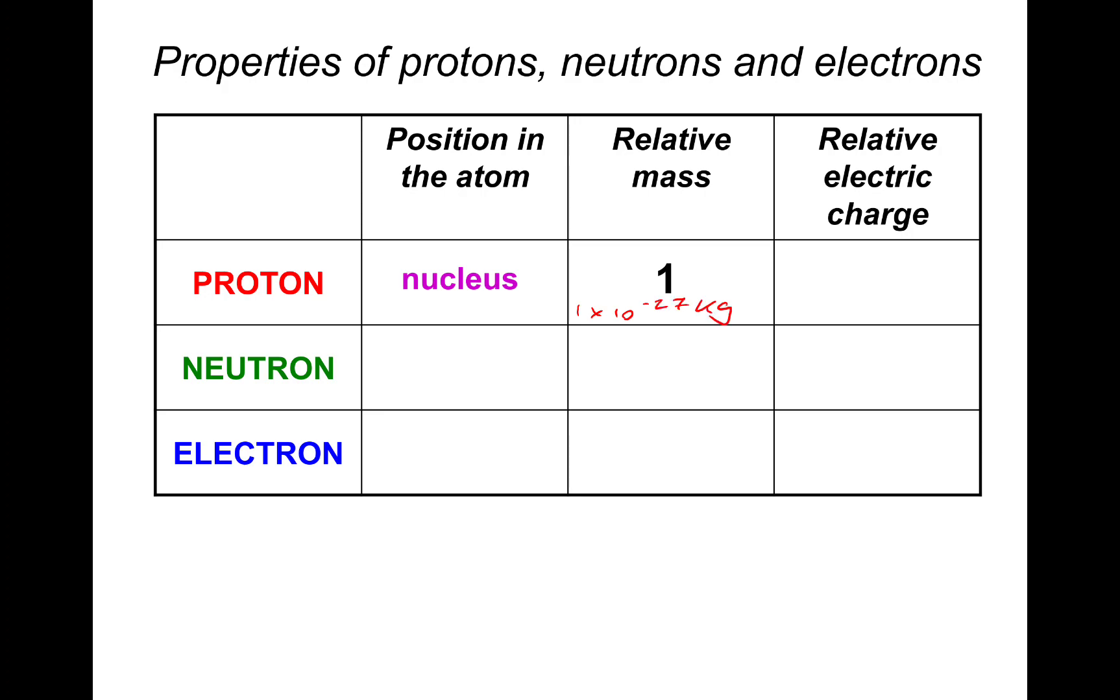It's very small, but at GCSE we just deal with relative atomic mass. So we call a proton plus one, and then the neutron and electron will be compared to the proton. Same with the charge. The relative electric charge for a proton, we just say plus one because it's got positive charge. The charge of a proton is actually plus 1.6 times 10 to the power minus 19 coulombs.